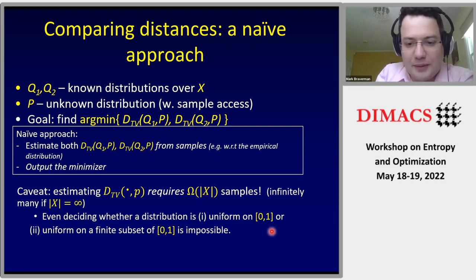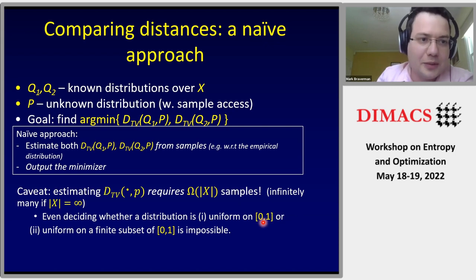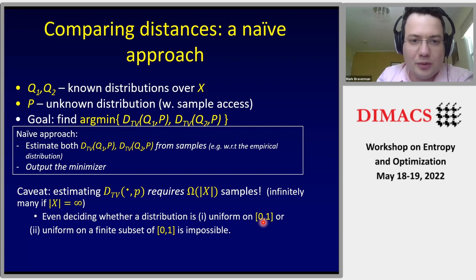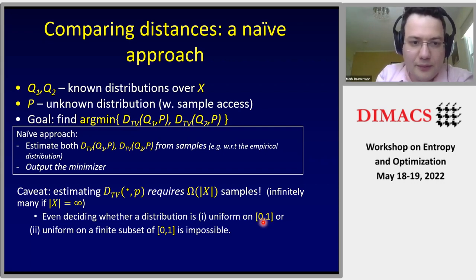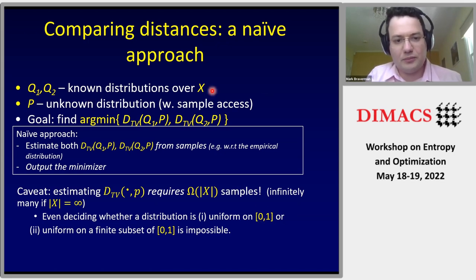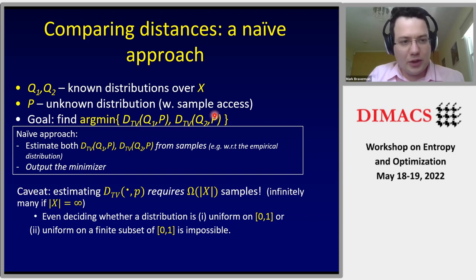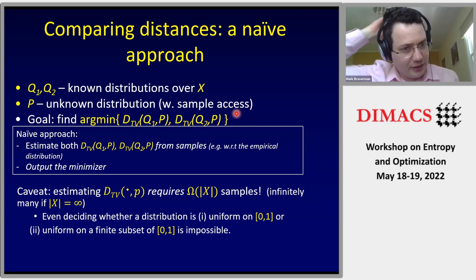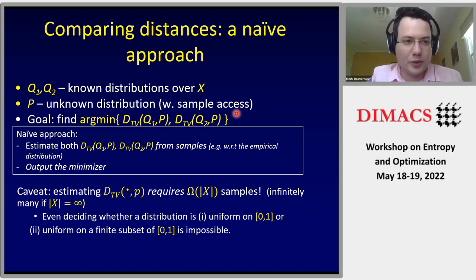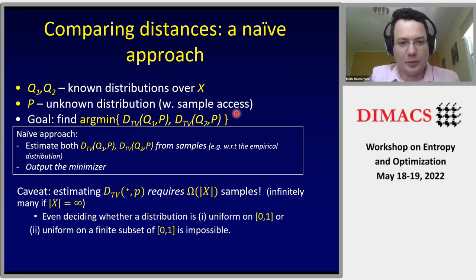For example, given samples from the interval [0,1] we can't tell from a finite number of samples whether we are getting truly uniform points or uniform points from some weird subset of the [0,1] interval. This shows that it's a hard problem — we cannot expect to get the exact precise answer, we can only approximate it.